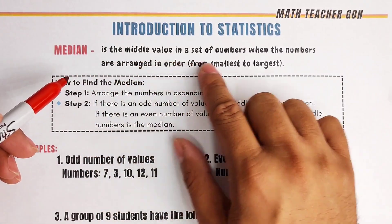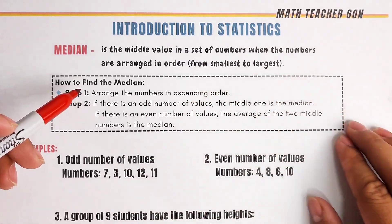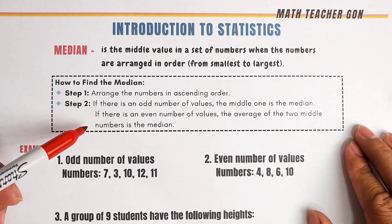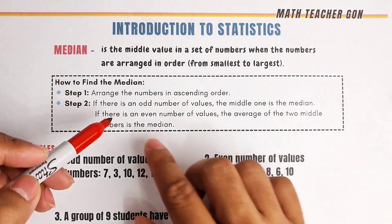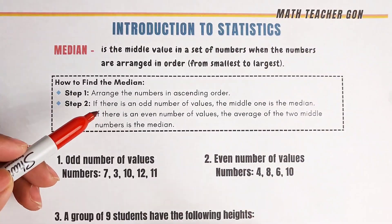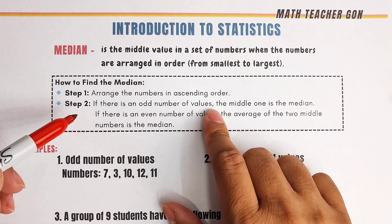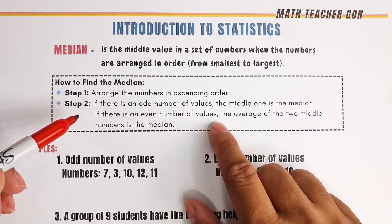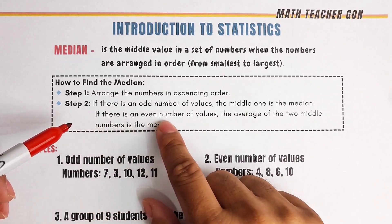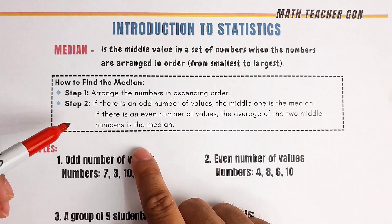A median is the middle value of a set of numbers when the numbers are arranged in order from the smallest to the largest. Here are the steps: Step 1, arrange the numbers in ascending or descending order. Step 2, if there is an odd number of values, the middle one is the median. If there are an even number of values, the average of the two middle numbers is the median.